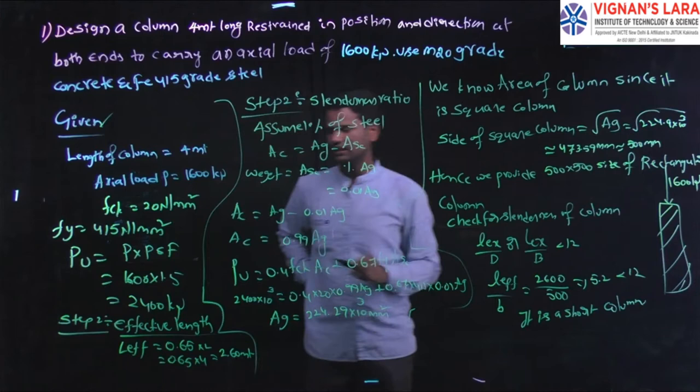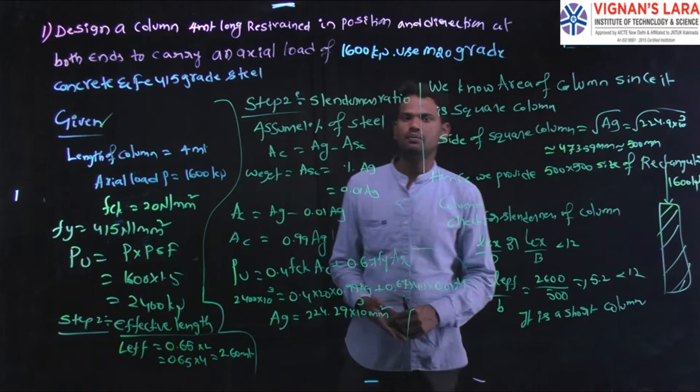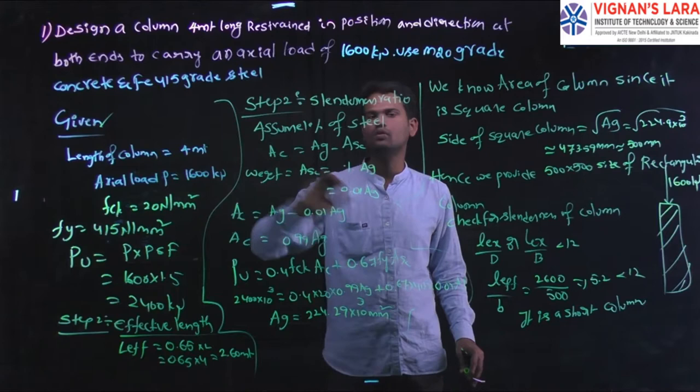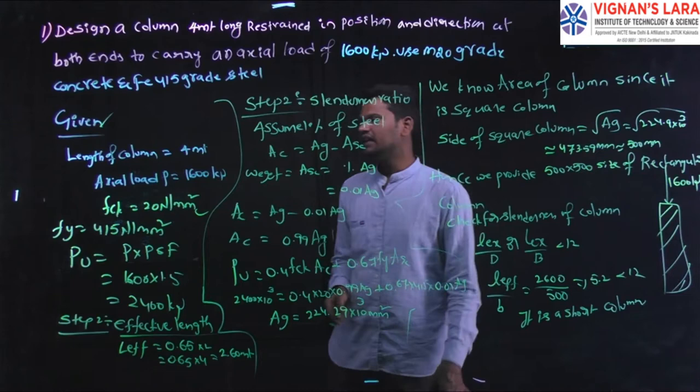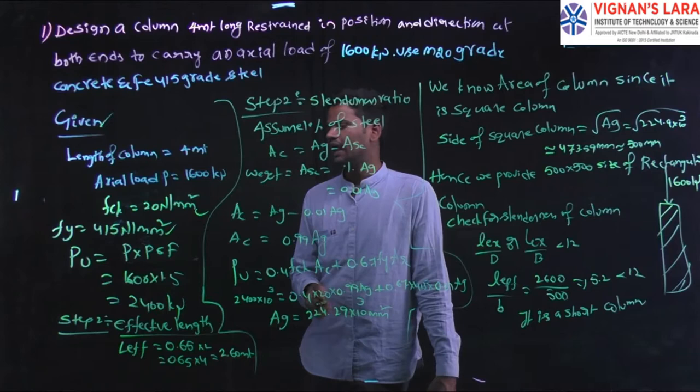The given parameters: length of the column L equals 4 meters; axial load acting on the column equals 1600 kilonewton; characteristic compressive strength of concrete, fck equals 20 N/mm²; and yield strength of steel, fy equals 415 N/mm².